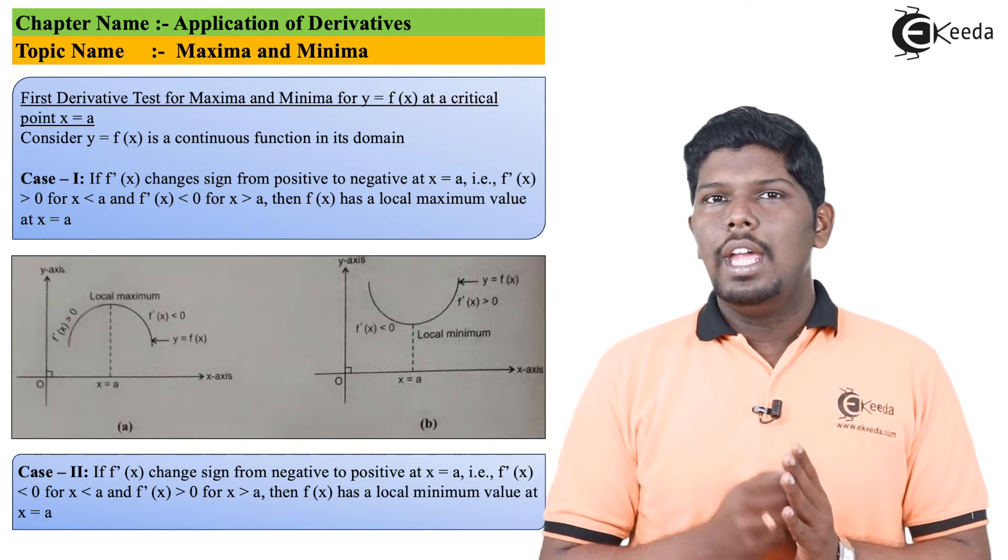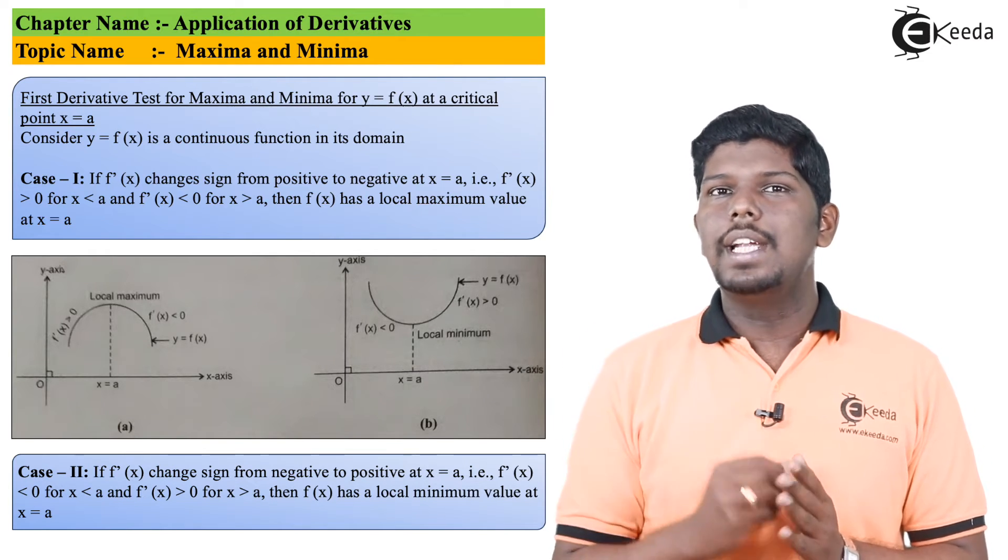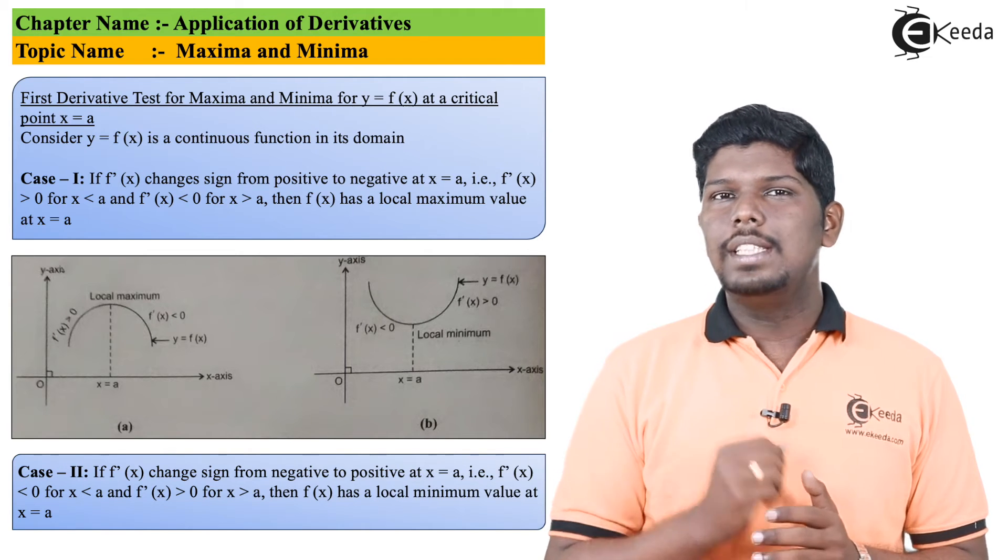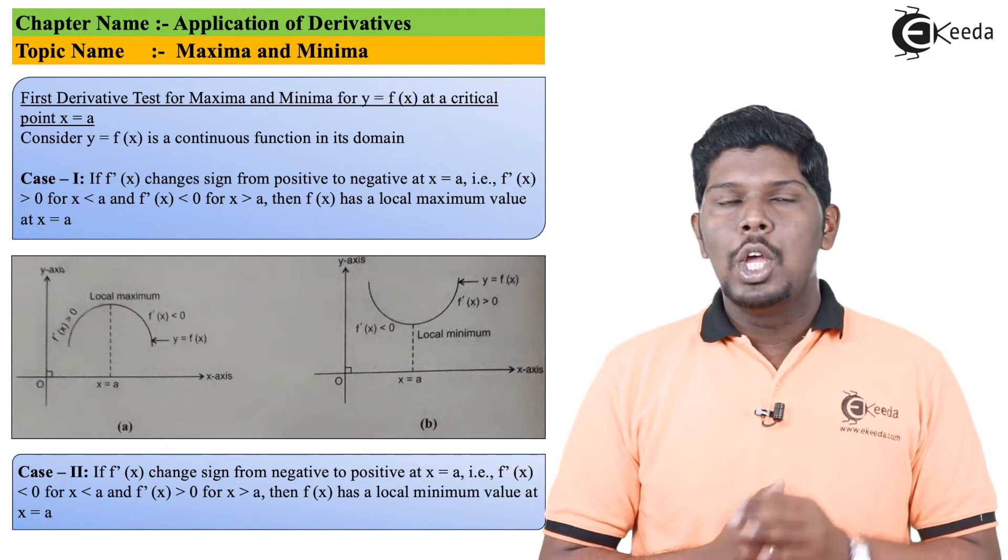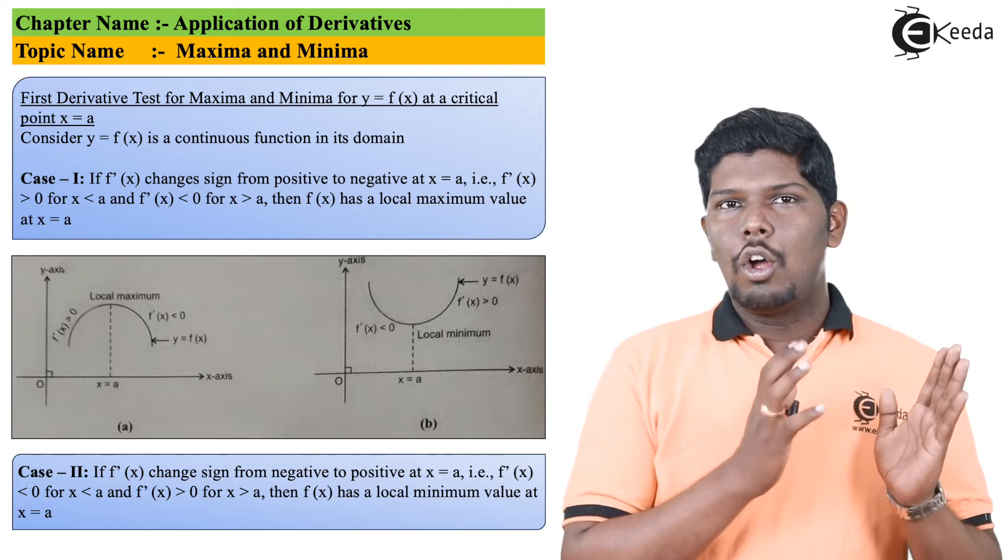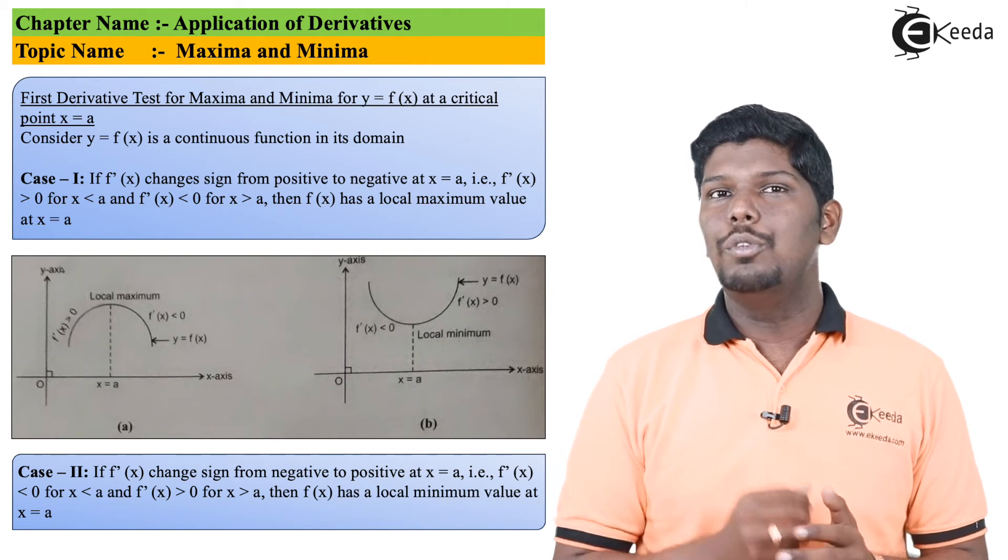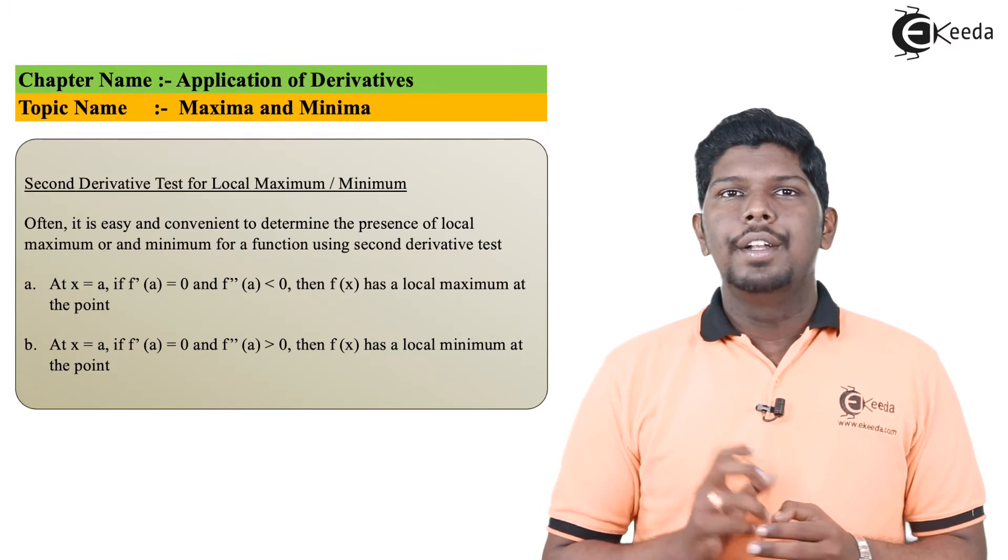But after x equals a, if you draw tangents to the points that are present on the curve, you can see the slope will be positive. So whenever there is a transition from negative slope to positive slope, it means you are going to find the minimum value of the function.